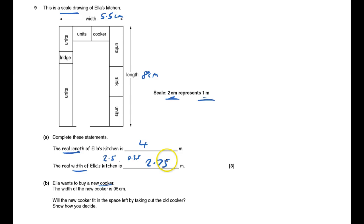She wants to buy a new cooker. The width of the cooker is 95 centimeters. And so if I times that by two, that gives 190 or 1.90 centimeters. That's what the gap needs to be. And it's only 1.6 centimeters.